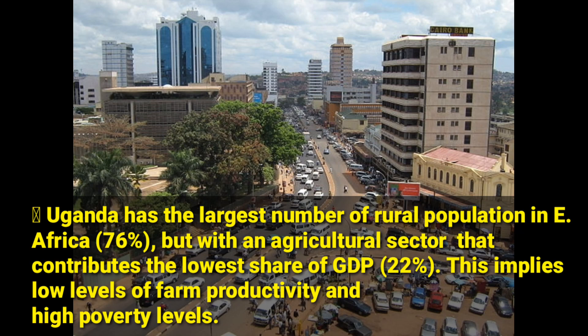In Uganda, we have the highest rural population in East Africa, though the agriculture sector contributes only about 24% to the GDP of the country. This implies that people are in the villages but they produce less than what they're supposed to produce, which is a sign of poverty in Uganda.